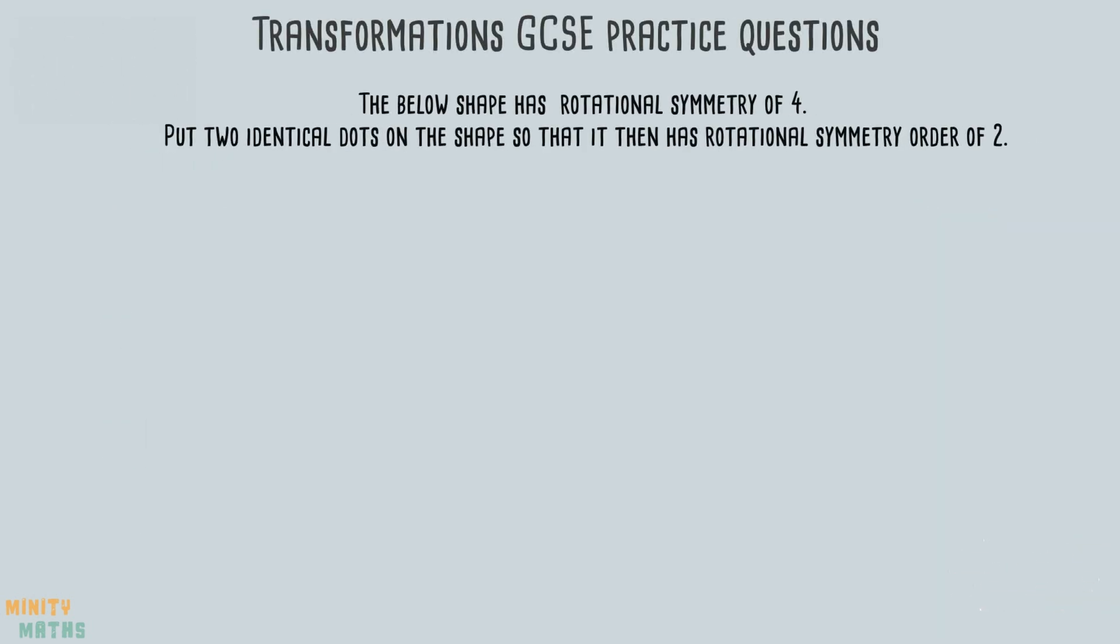This next question relates to rotational symmetry. In an exam, you can use tracing paper for this part. We are told that the square has rotational symmetry of order 4. This means that when we rotate the square through 360 degrees, it will look identical 4 times. The question asks us to place 2 dots onto the square to give it a rotational symmetry of 2, instead of 4.